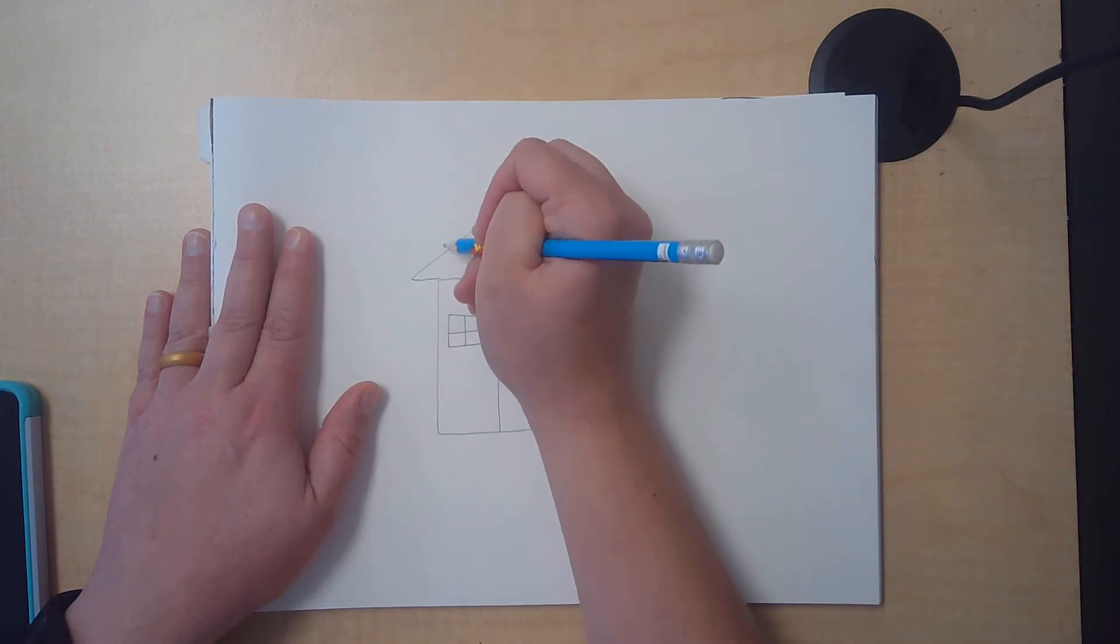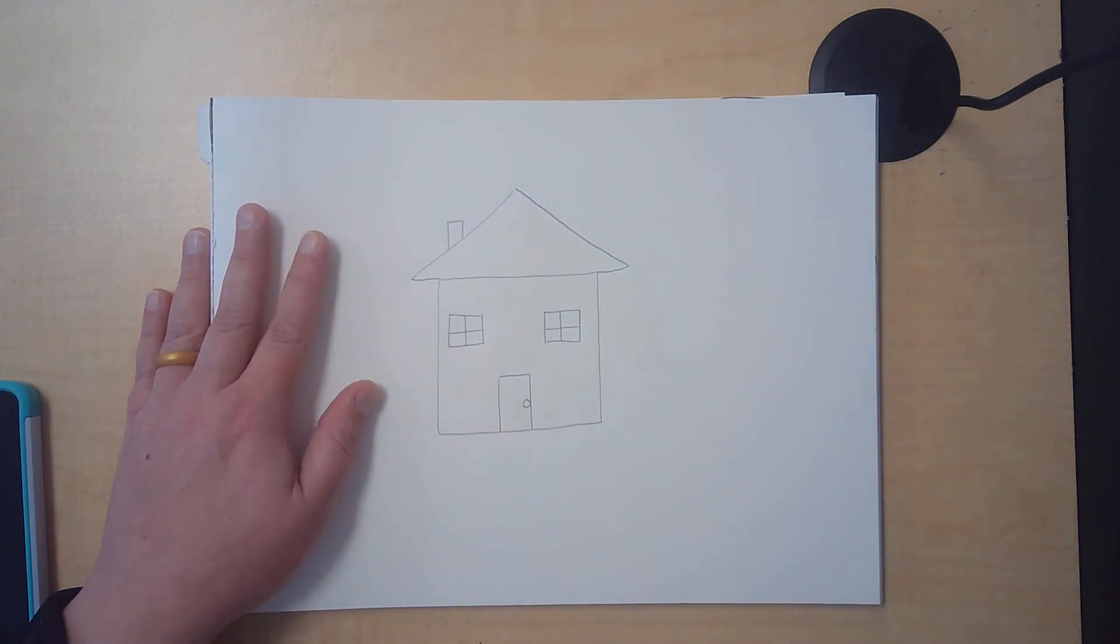And maybe a chimney. I could use the top part of a rectangle for a chimney. What are some other details that I think would help my house look nice?